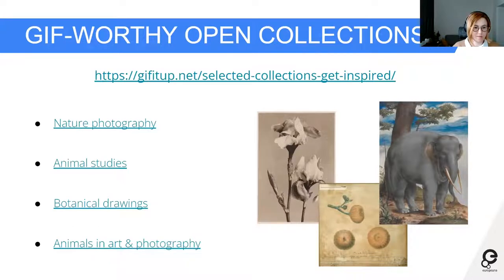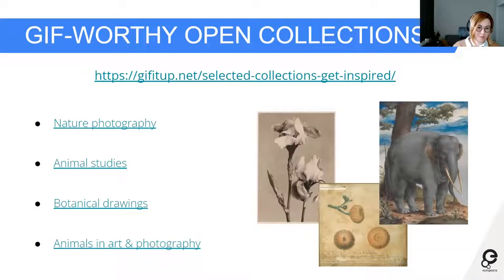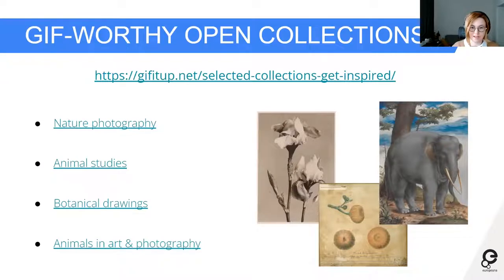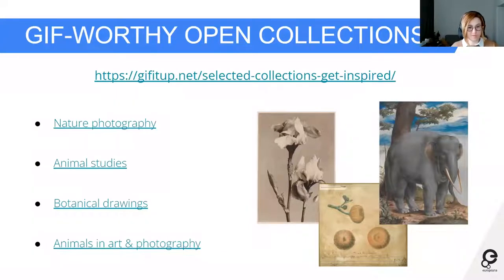The first special category is nature. I've linked some nature photography in the slide — you can see this beautiful iris. There are animal studies like this elephant, and some cool botanical drawings like what I think is a fig fruit. At the end there's also a gallery containing different depictions of animals in art and photography. I'm putting the links in the chat, including links to those three particular objects specifically.